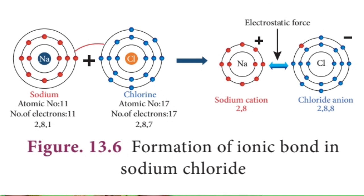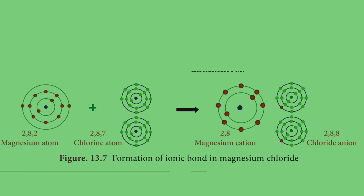Another example in your book is the ionic bond formed in magnesium chloride. Magnesium has atomic number 12, so the electron distribution is 2, 8, 2 — 2 electrons in the outermost valence shell. These 2 extra electrons are donated, one to each chlorine atom, forming 2 bonds to give magnesium chloride, MgCl2. An ionic bond is formed between magnesium and 2 chloride ions.